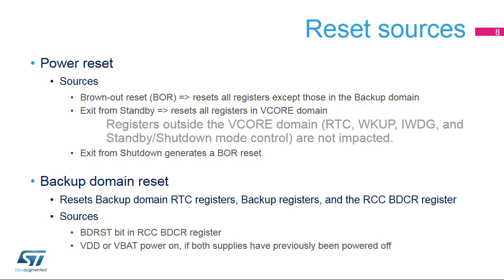The third type of reset is the backup domain reset, which resets the RTC registers, the backup registers, and the RCC backup domain control register. This reset occurs when the VDD and VBAT are powered on if both supplies have previously been powered off.